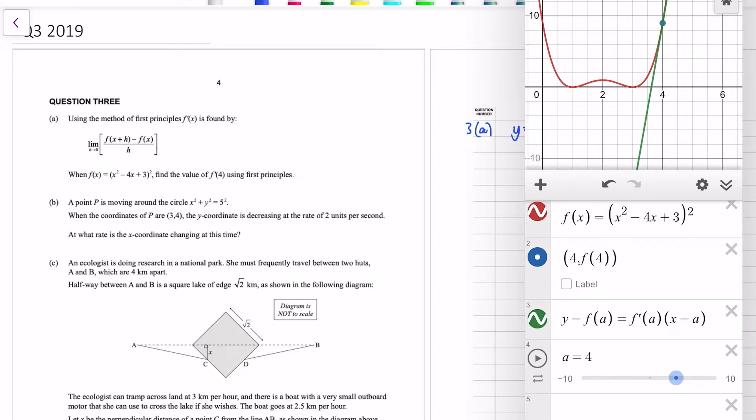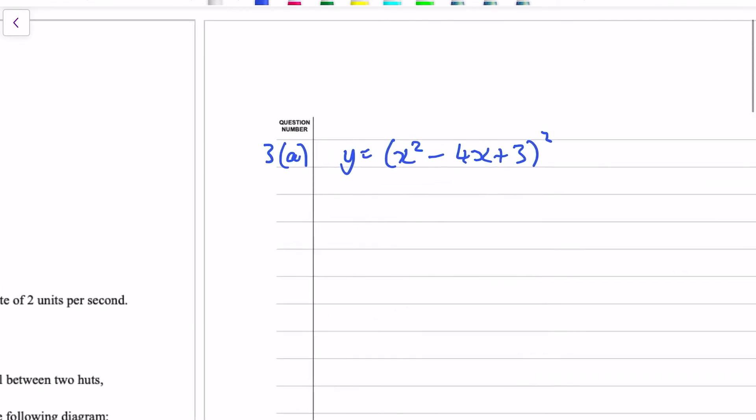Of course, we can just use differentiation to find the slope. So if I was to use the chain rule and go dy dx, rather than expand it out, the chain rule just allows us to differentiate as it is. So the 2 comes down the front, drop the power to a 1 and then multiply by the inner derivative, which is 2x minus 4. And then sub in x equals 4 into it. dy dx is 2 lots of 16 minus 16 plus 3, so 2 lots of 3 times 8 minus 4. 2 lots of 3 is 6 times 4. Did I say the answer was 12? My bad. The answer is 24.